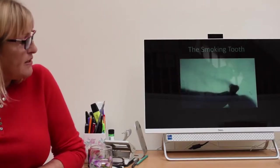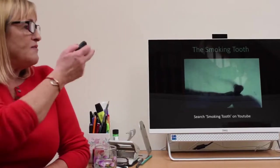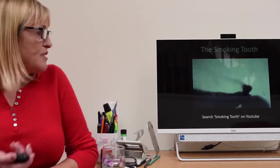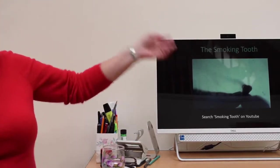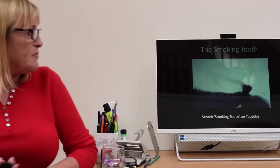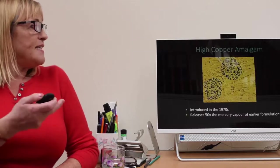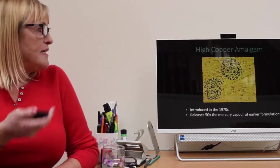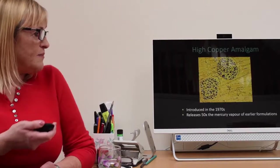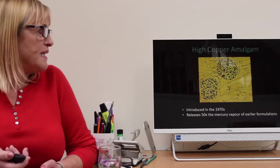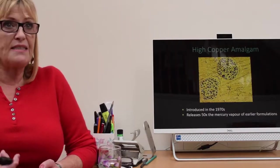You can look this up online under the smoking tooth. They've taken an extracted tooth with amalgam filling, stimulated it, polished it. That's under black light. You can see the mercury vapors coming off that tooth. In the 70s because of the problems of busting teeth apart, they introduced high copper amalgam which is less prone to corrosion. But it releases 50 times the mercury vapor of the earlier formulations. You can see the mercury is beading here on the surface. So things got a whole lot worse in the 1970s.